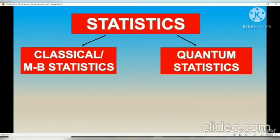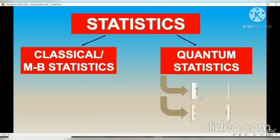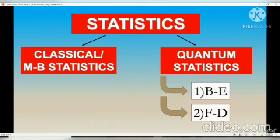Further, quantum statistics has two types: Bose-Einstein statistics and Fermi-Dirac statistics. Because both are categories of quantum statistics, the particles considered under these statistics are indistinguishable in nature.